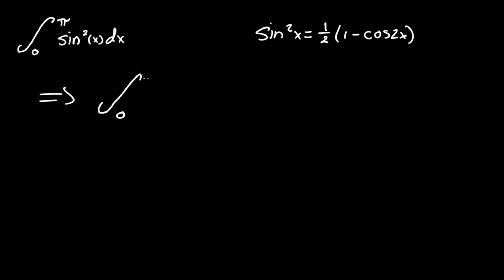So that will equal the integral between 0 and pi of one half times one minus cosine 2x dx. And treating one half as again a coefficient makes it a little easier to solve. We do one half times the integral between 0 and pi of one minus cosine 2x, and now we're ready to integrate.